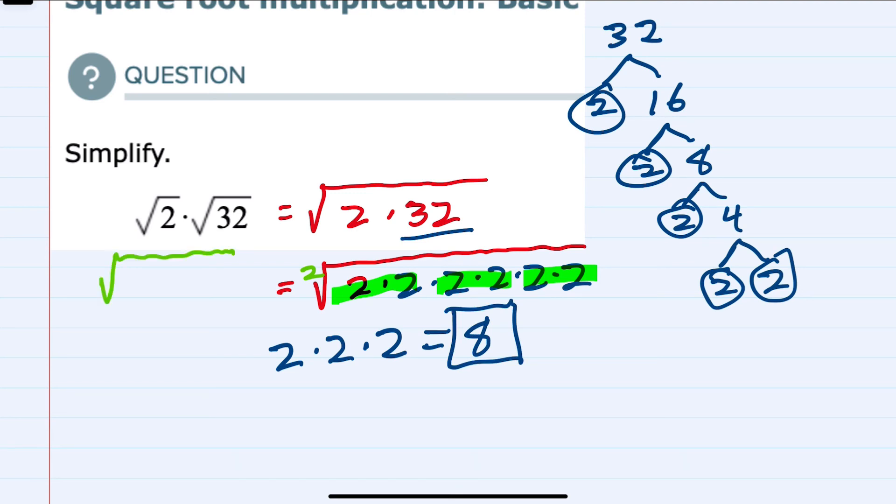we could just multiply the 2 and the 32 to be 64, and then the square root of 64 is 8. So both methods yield the same solution.